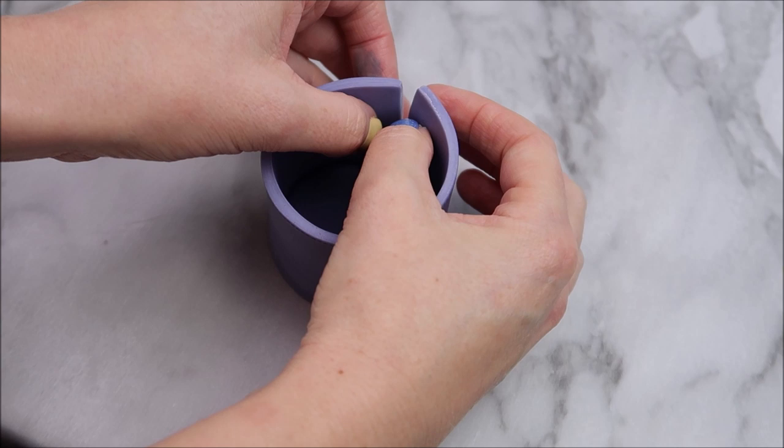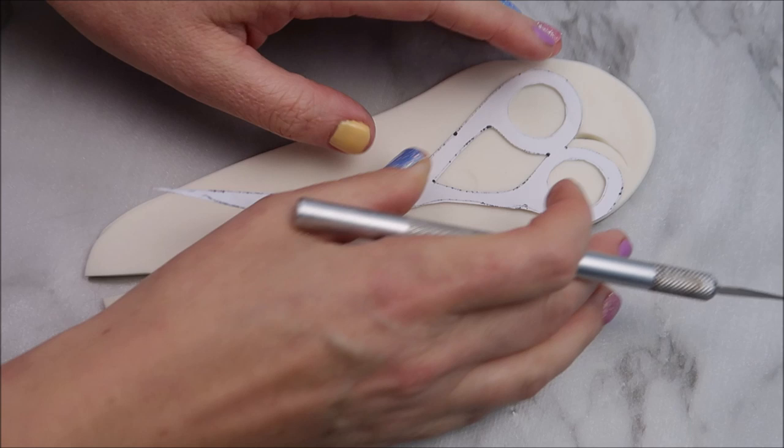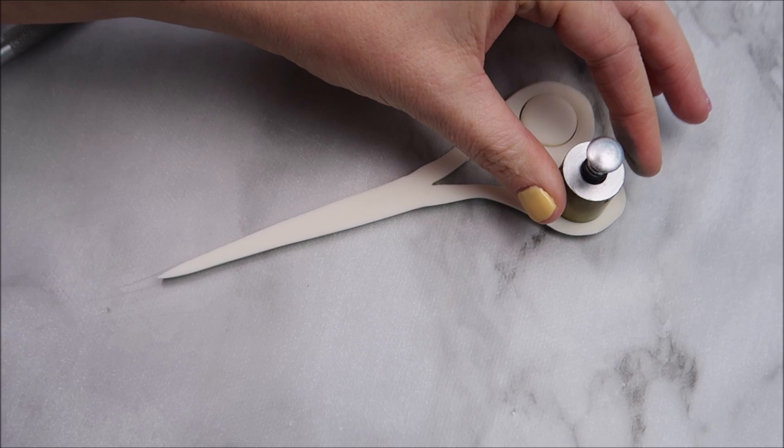Now we're going to use our scissors template and you're going to use that modelling paste that we've rolled out. I find it easier to cut out the templates whenever the modelling paste is slightly dry. So you're going to trace around the outside and I'm using two circle cutters here that are the same size as the circles inside the scissors.